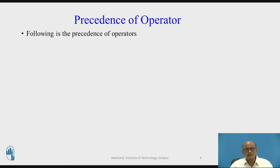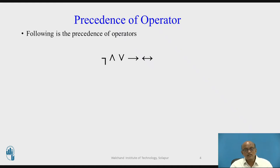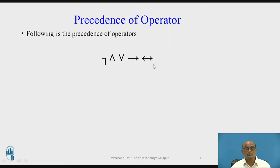First of all let us understand the precedence of the operator. There are different types of operators. Out of these, negation has got the highest priority, then AND is next, then OR, then conditional, and bi-conditional. So among these five operators, bi-conditional has got the least priority whereas negation has got the highest priority.